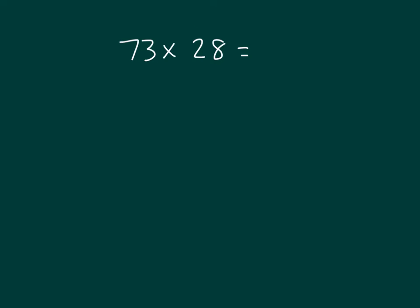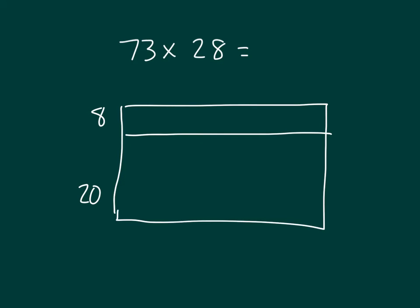We have 73 times 28. Let's break apart 28, that's that second factor, into 8 and 20. This time, we're going to go ahead and keep 73, right there. So the area for this right here, would be 8 times 73. And when we solve for that, we get 574.